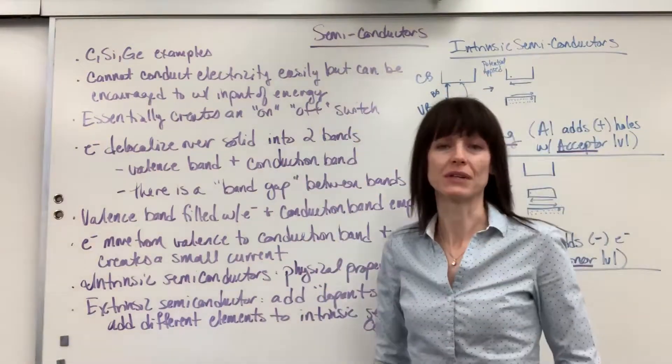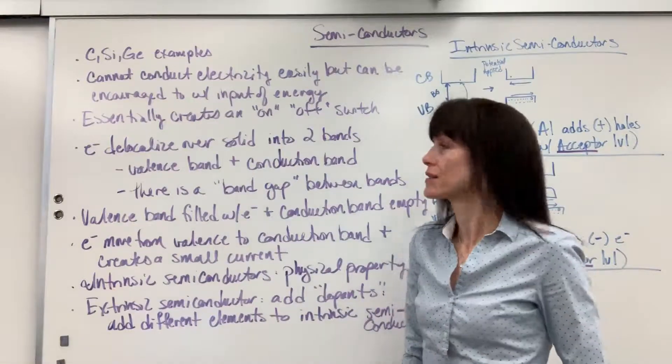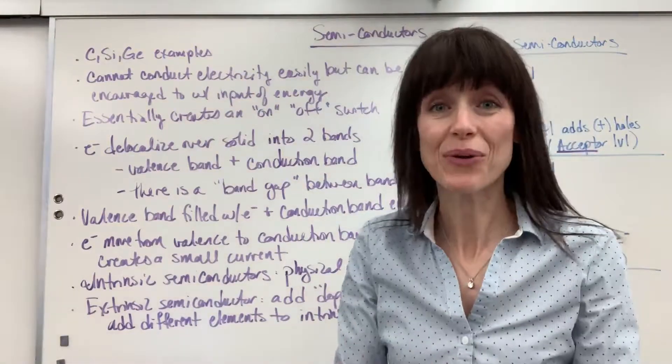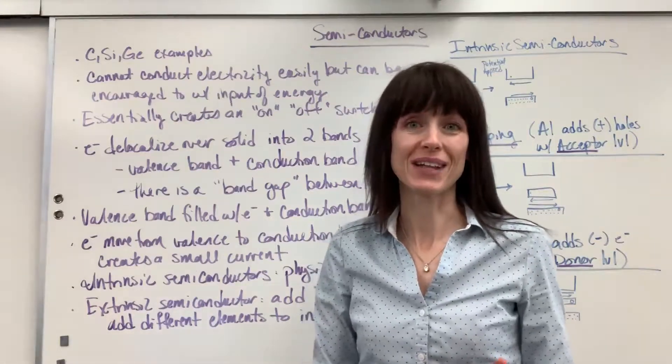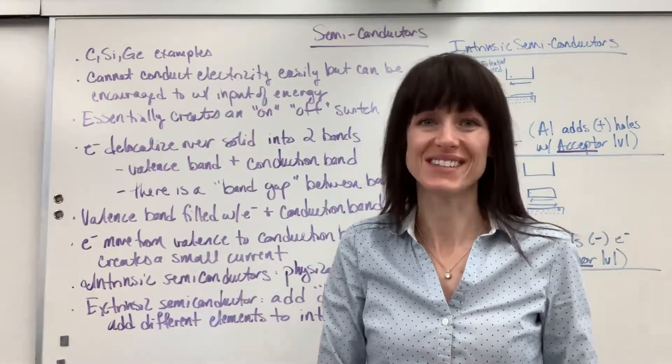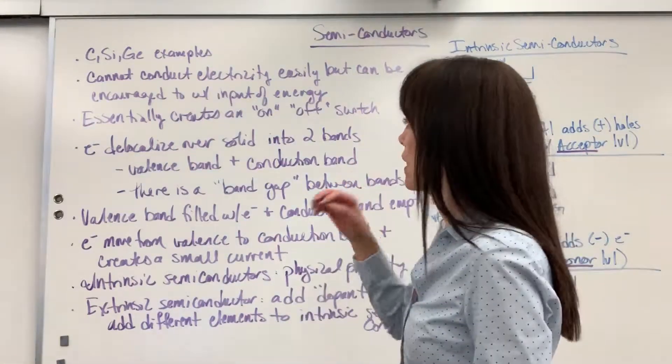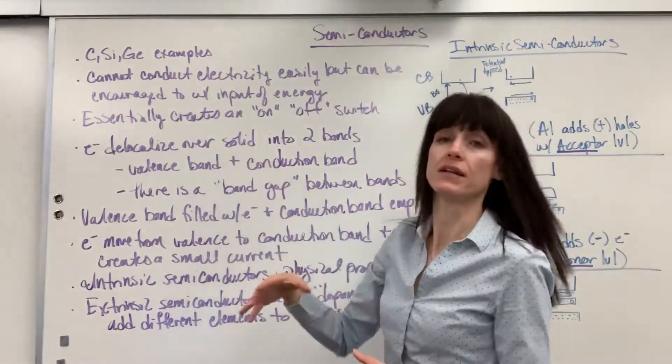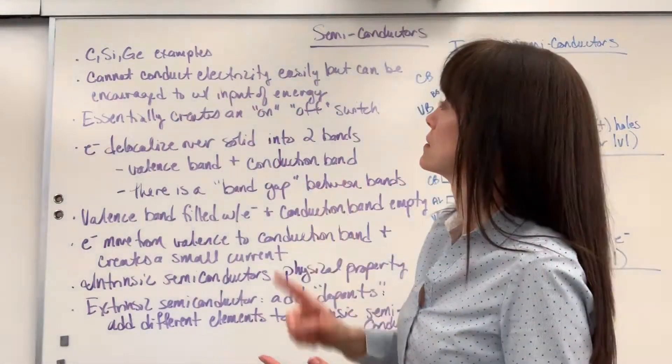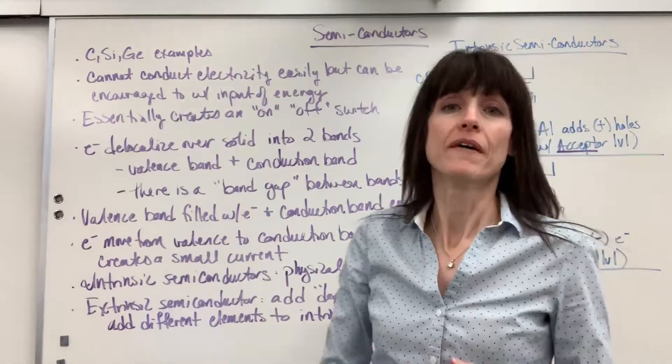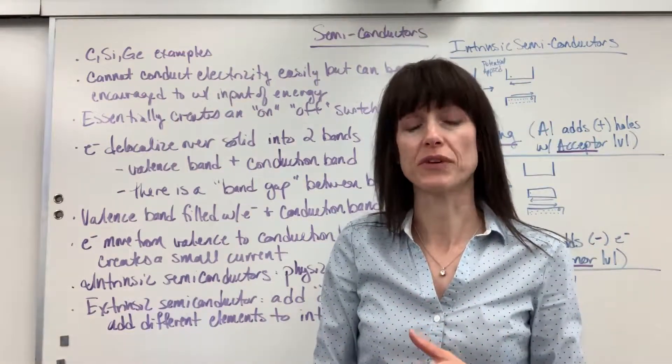Now, you'll find this really, really interesting. In these semiconductors, they actually have delocalized electrons. Now, the only place that we've talked about delocalized electrons is metallic bonding, the sea of electrons. Well, in reality, as a solid, carbon and the silicon and germanium, they can have these delocalized electrons. But here's what's different.